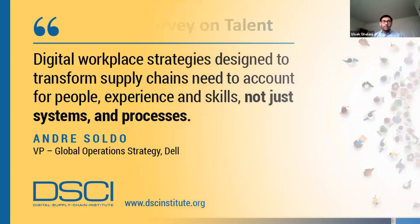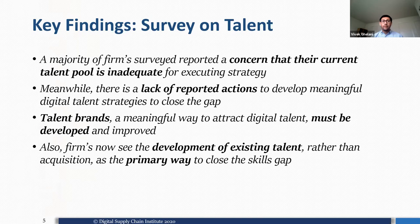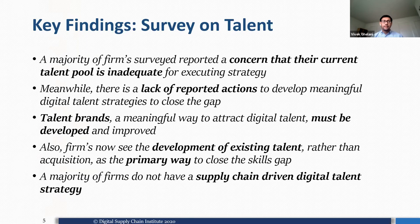During our research we conducted surveys, and here are key insights. The majority of respondents reported concern that the current talent pool is inadequate for executing a digital supply chain strategy, because they lack the skills to shift from intuition-based decision making to a data-driven decision-making model. Companies need to train their current people but also hire new digital talent who are more focused on data-driven decision making and understand data deeply.